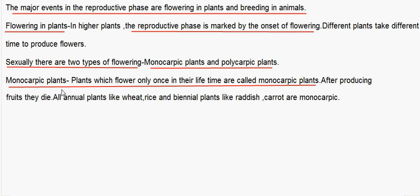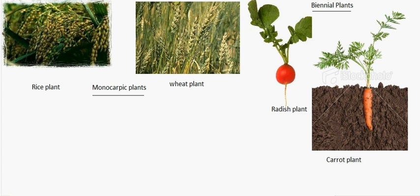In monocarpic plants, plants flower only once in their lifetime. After producing the fruits, they die. All annual plants like wheat and rice, and biennial plants like radish and carrot, are monocarpic. Here you can see the rice plant and the wheat plant which are monocarpic, and the biennial plants which consist of radish and carrot. All these are monocarpic.